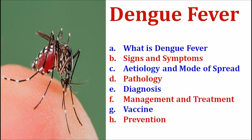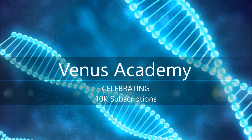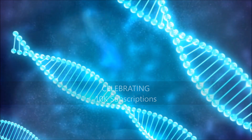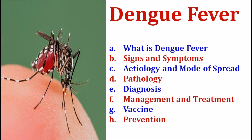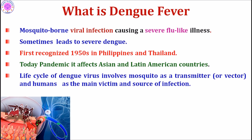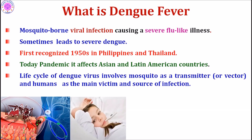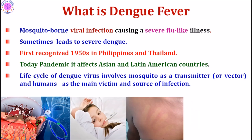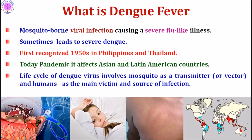Dengue fever is a mosquito-borne viral infection. It causes a severe flu-like illness and sometimes leads to severe dengue. It was first recognized during the 1950s in the Philippines and Thailand, and today it is a pandemic affecting Asian and Latin American countries.